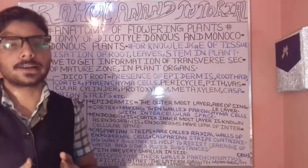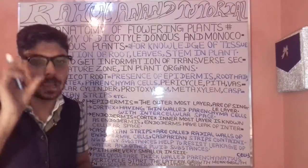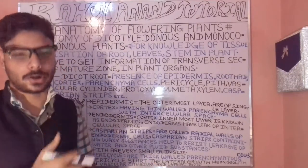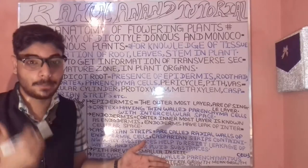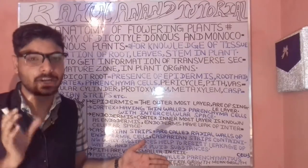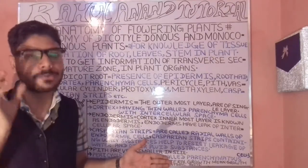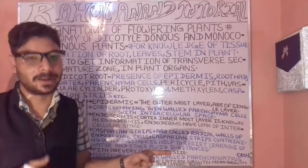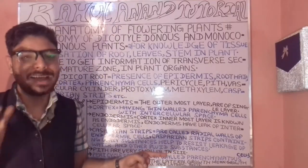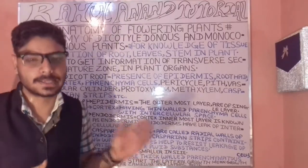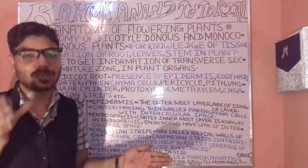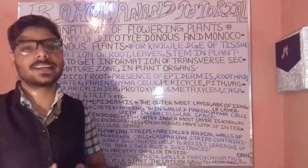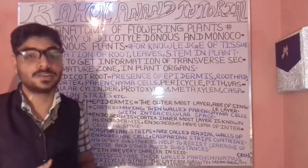The components of the root are: epidermis, then endodermis, then cortex, then the Casparian strips, then proto-xylem, then meta-xylem, then pericycle, and then conjunctive tissue. Now let's understand what these parts are in the case of the dicot root.